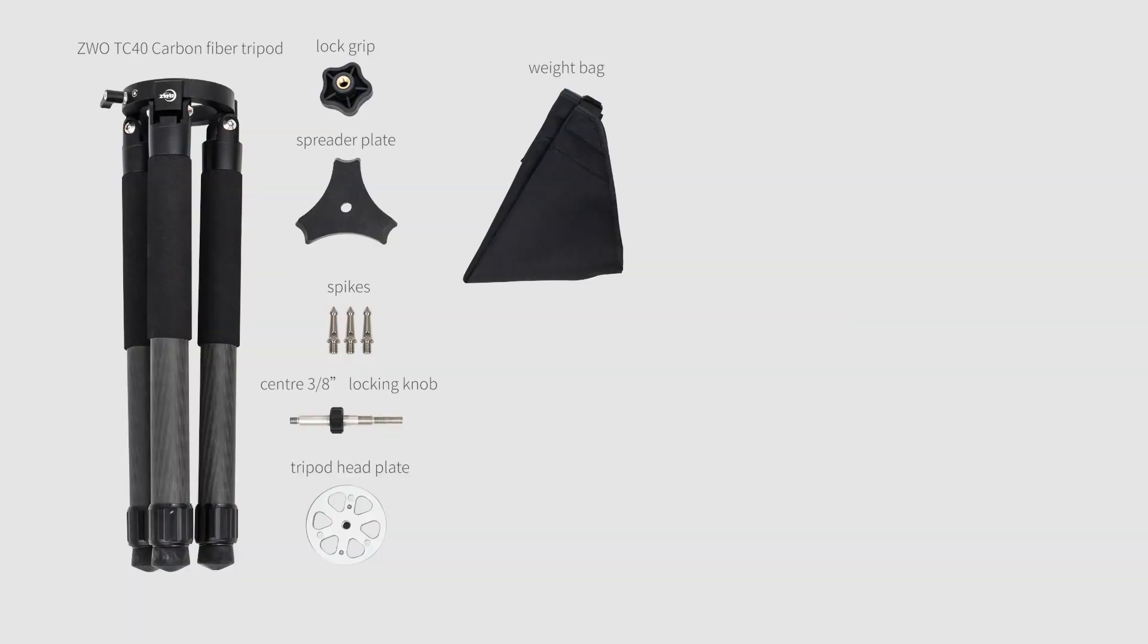The carbon fiber tripod comes with a tripod, the lock grip, the triangular spreader plate, a central 3 1⁄8 inch tension bolt, stability pegs, the mounting plate, and a weighted bag.